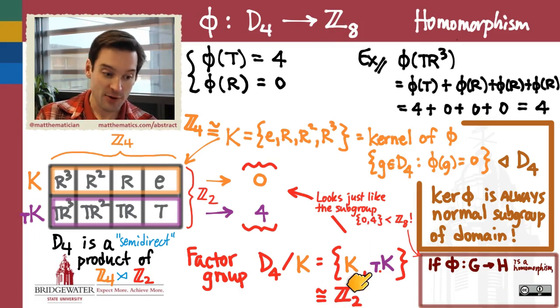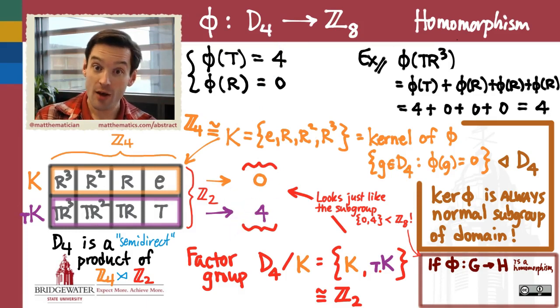And so this factor group, as the group of cosets of k inside of my original group, and the image of this homomorphism, which is these two integers taken with addition mod 8, those two groups behave exactly the same as one another. Those two groups are isomorphic.